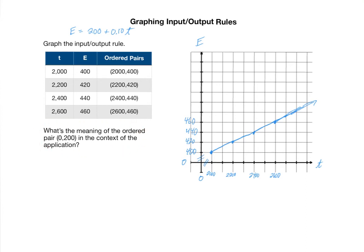What's the meaning of the ordered pair (0, 200) in the context of the application? Make sure you address this in the context of the application, meaning don't say that the 0 is the input and 200 is the output. Say it with respect to what those things mean. So in this case, if the input were 0, that means that he's sold no food, no dollars worth of food. And then that 200 would mean he still makes that $200 because that's his base pay.